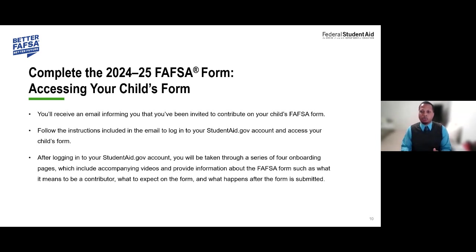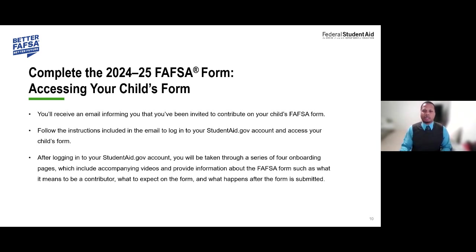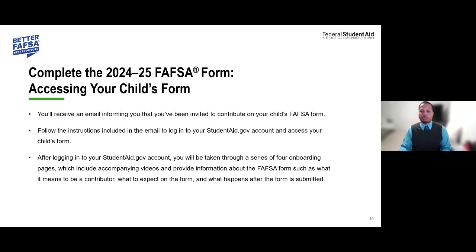Be aware of an issue preventing required contributors without a social security number from accessing the 2024-25 FAFSA form. Until it's resolved, if the student must meet a FAFSA deadline set by a state or institution, follow the steps outlined on StudentAid.gov within the recent announcement. After the form is processed, contributors without a social security number must return to the form to provide consent, approval, and signature. This allows us to access IRS exchange data and calculate the Student Aid Index (SAI) — the index number used to determine a student's eligibility for federal, state, or institutional financial aid.